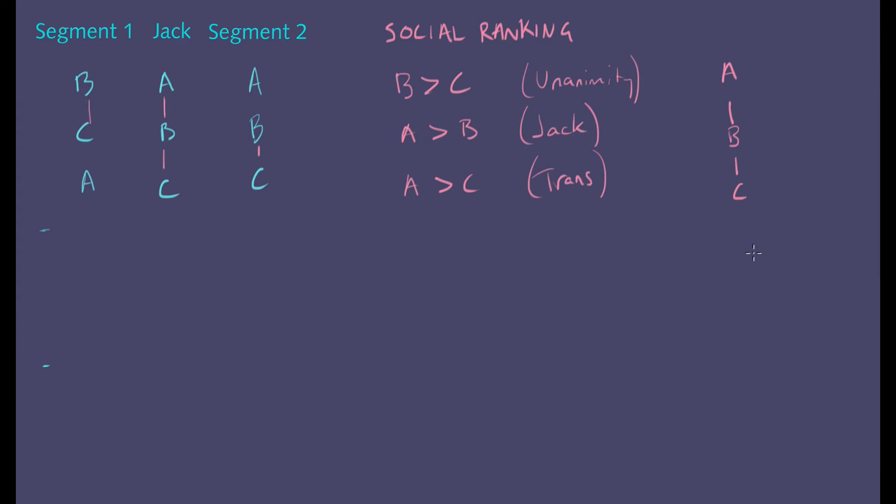Let's now move to the second stage. And I suppose the only thing that changes here is Jack changes his mind about that crucial pair A and B. So for this group, it's still B beats C beats A. For this group, it's still A beats B beats C. But now Jack thinks B beats A beats C.